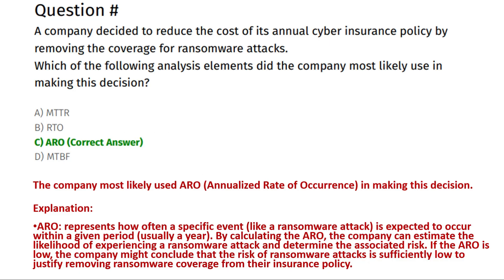Next question: a company decided to reduce the cost of its annual cyber insurance policy by removing coverage for ransomware attacks. Which of the following analysis elements did the company most likely use in making this decision? Option A: MTTR. Option B: RTO. Option C: ARO. Option D: MTBF.